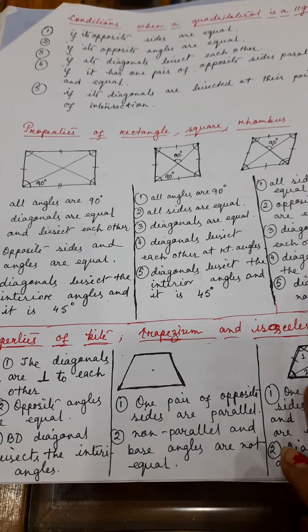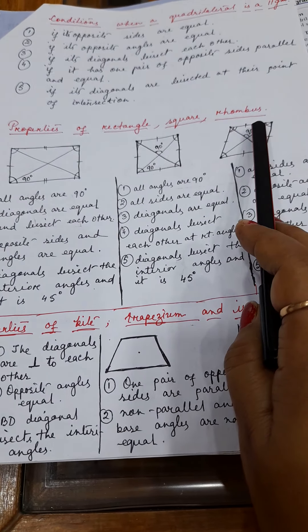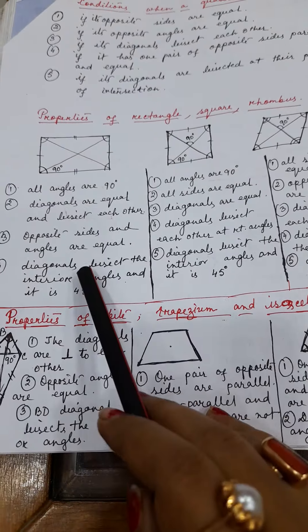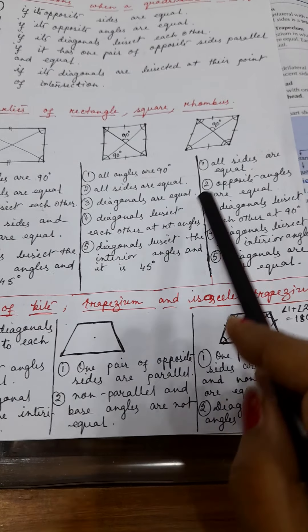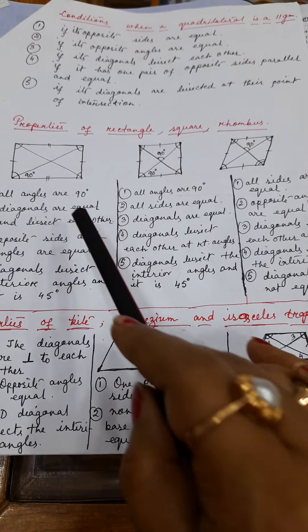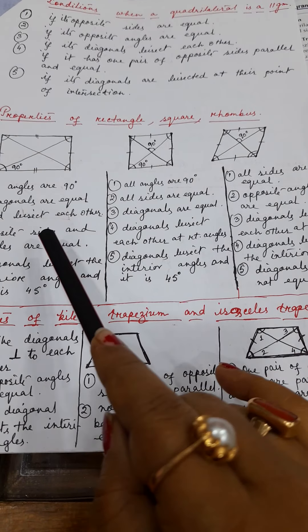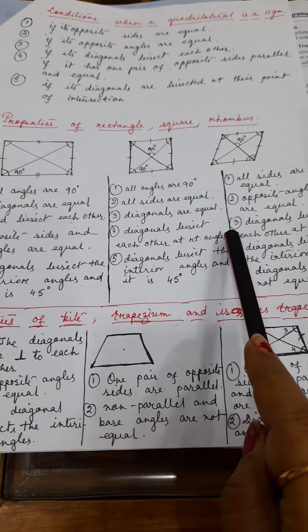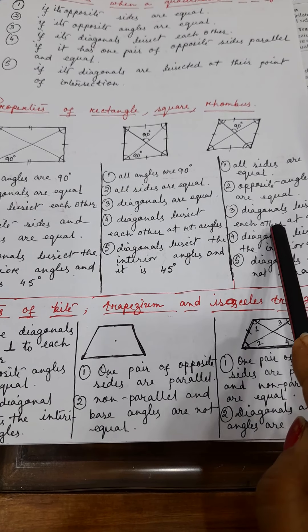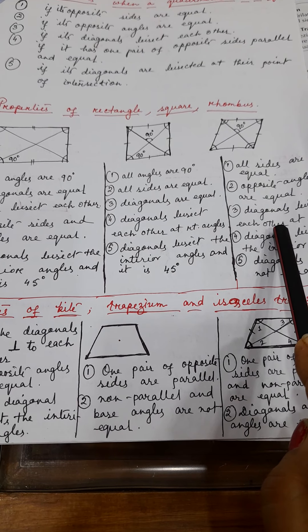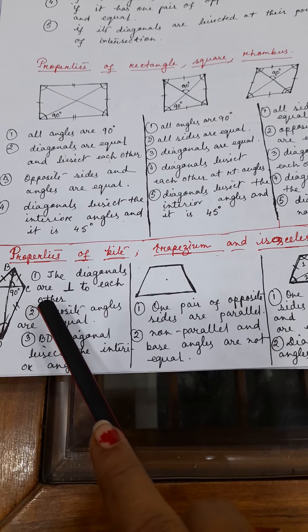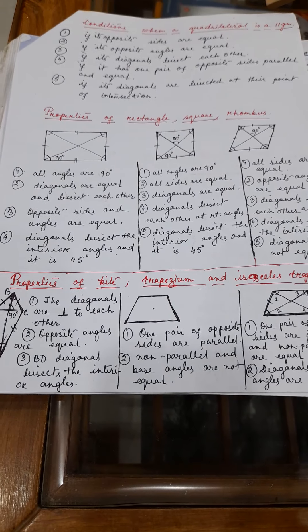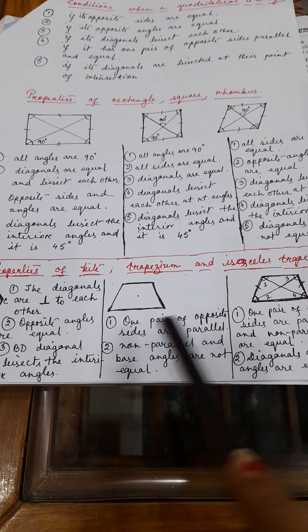Based on these conditions, a quadrilateral will be a parallelogram. There are also properties of rectangle, square, and rhombus — I have drawn all three. You already know these properties from earlier discussions. From these, you can also find the differences between the quadrilaterals. These properties will help you while solving problems. Properties of kite, trapezium, and isosceles trapezium are also included — all written and will be attached as a document.